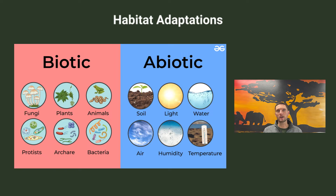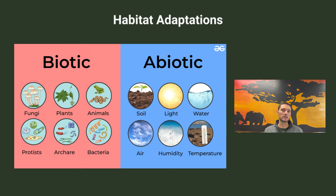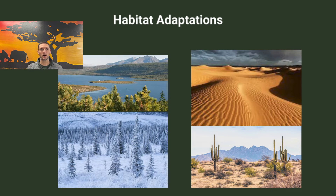Examples of abiotic factors include sunlight, water or precipitation, pH conditions, salinity, etc. Abiotic factors have a greater influence in extreme environments and in particular where there are low population densities — not a lot of individuals. Examples of these would be the desert or the taiga, both of which we'll talk about a little bit later.